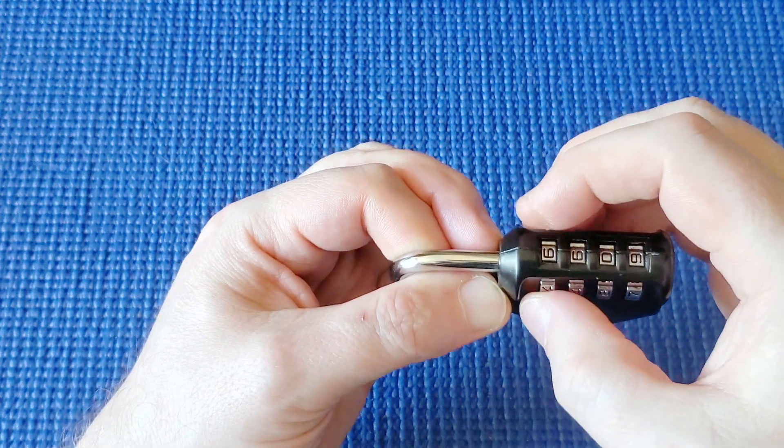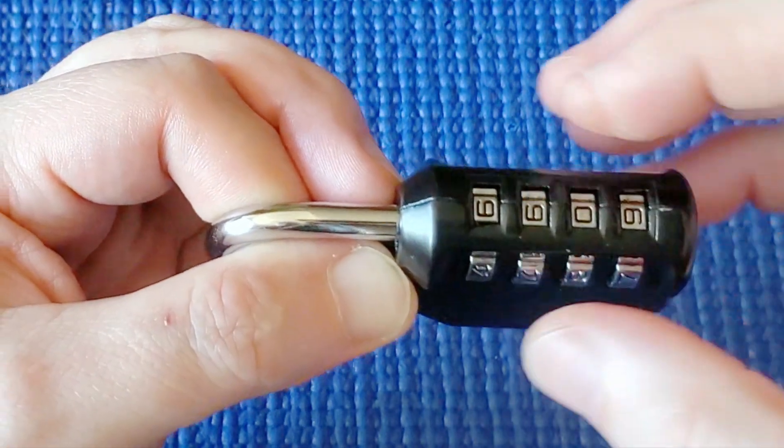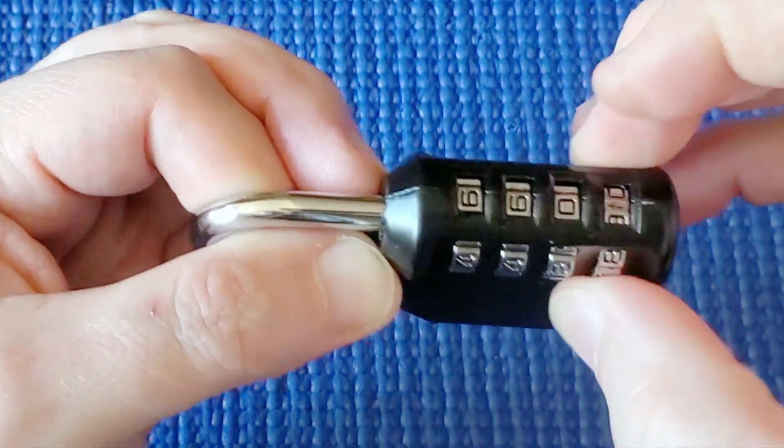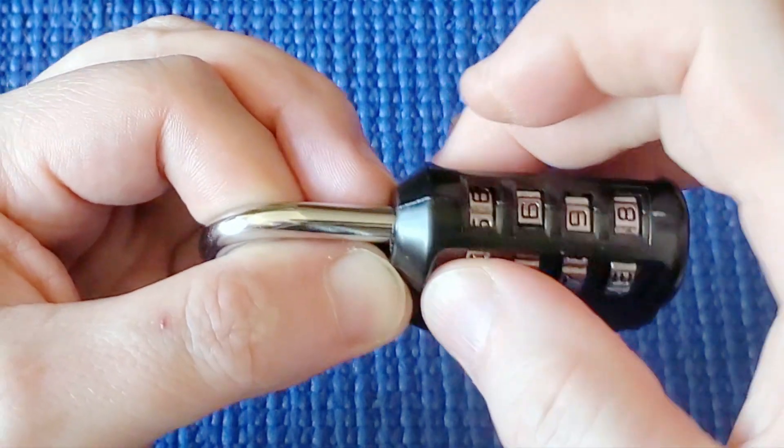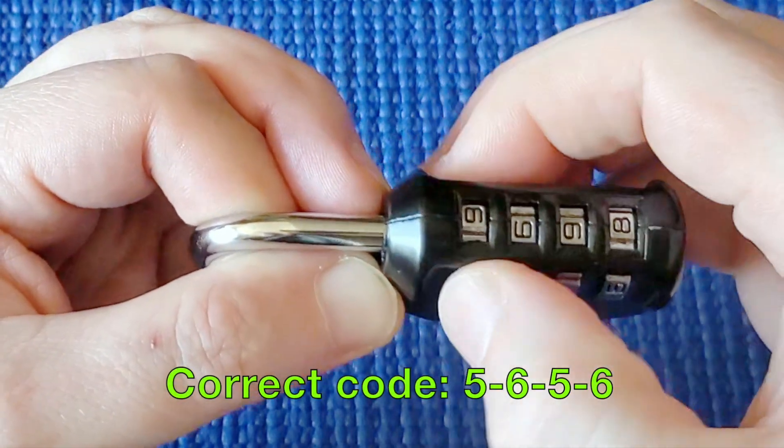I find that this disc here closest to the shackle is the one that's hardest to turn. These ones are easier to turn. So I'm going to turn this, just turn it, turn it, turn it.